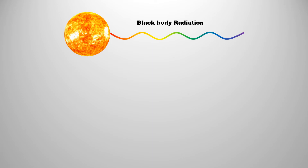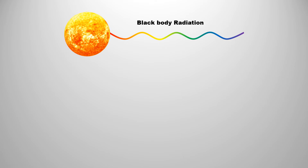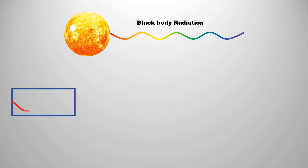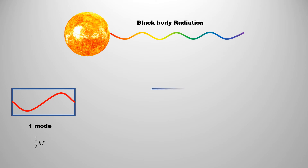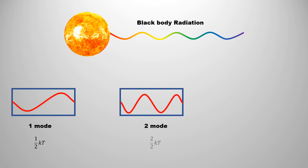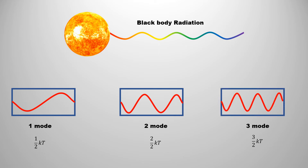Rayleigh and Jeans applied this theorem to blackbody radiation. For each mode of radiation, the energy will be half kT. To understand how many modes of radiation exist, let's consider a box. If the wavelength of the radiation equals the size of the box — meaning only one wavelength fits in the box — then it has one mode and energy will be half kT. If the wavelength is reduced to half, meaning two wavelengths fit in the box, then it has two modes and corresponding energy will be 2 times half kT. As the wavelength gets shorter, the number of modes increases and the corresponding energy also increases.